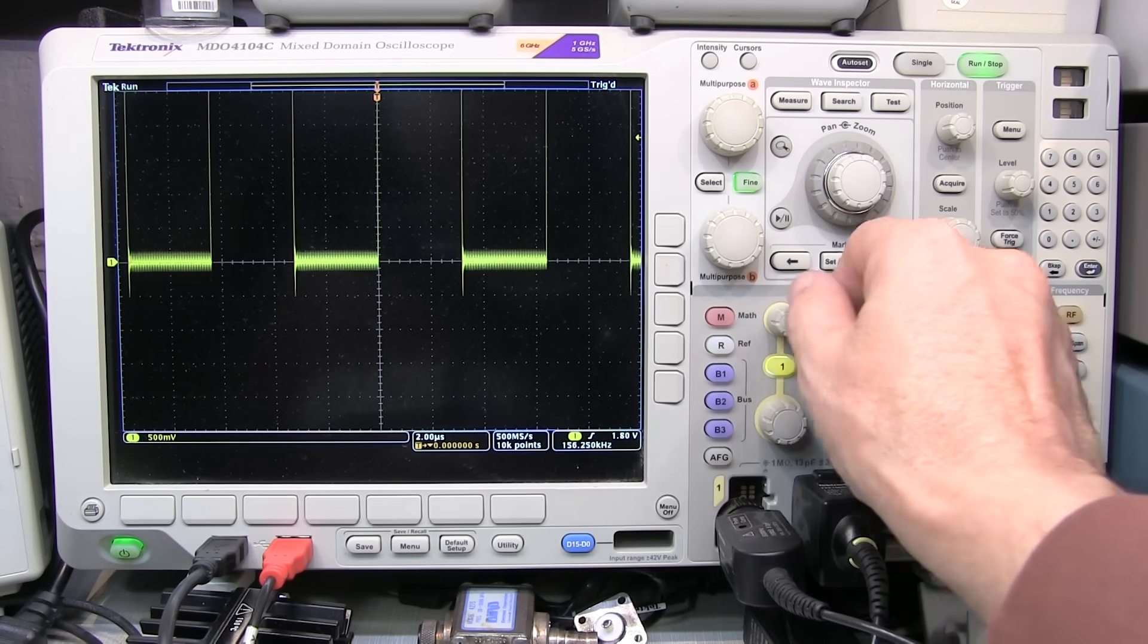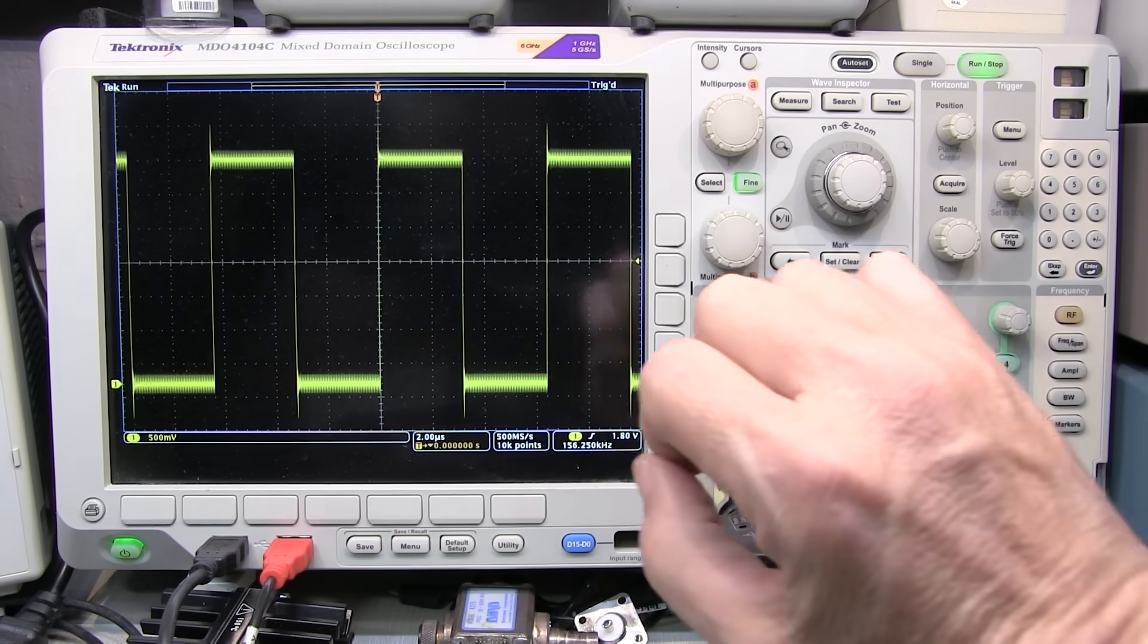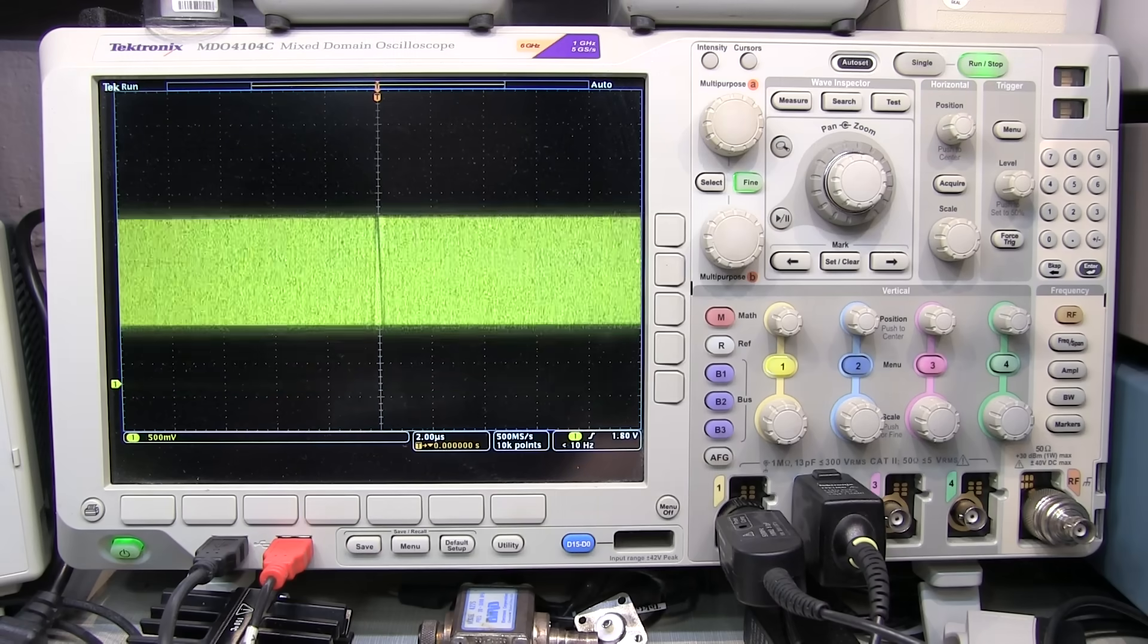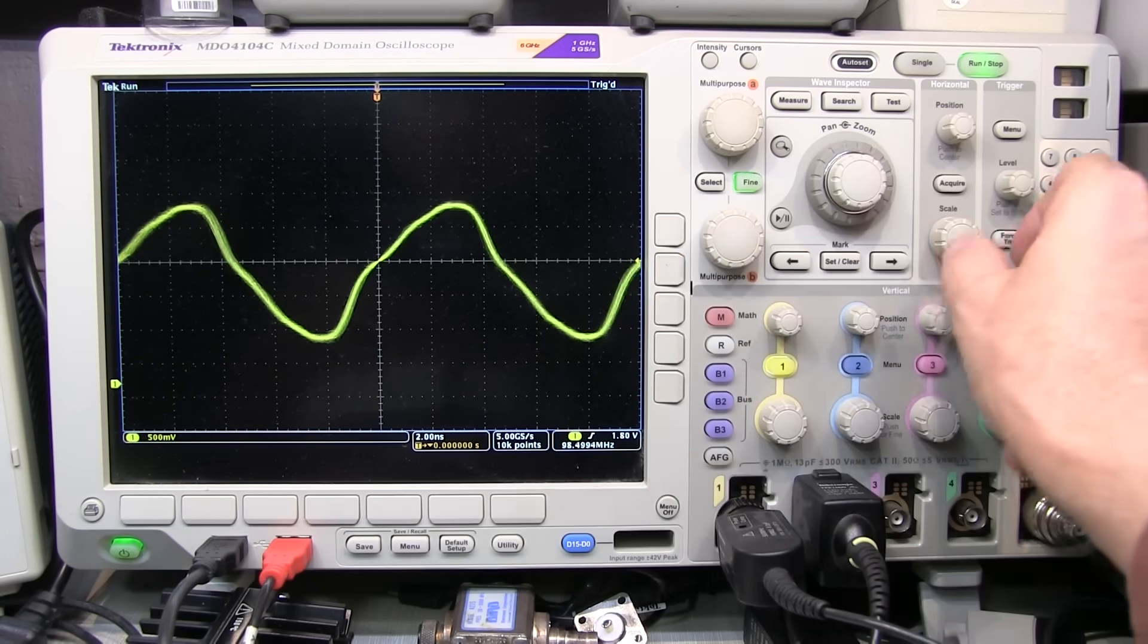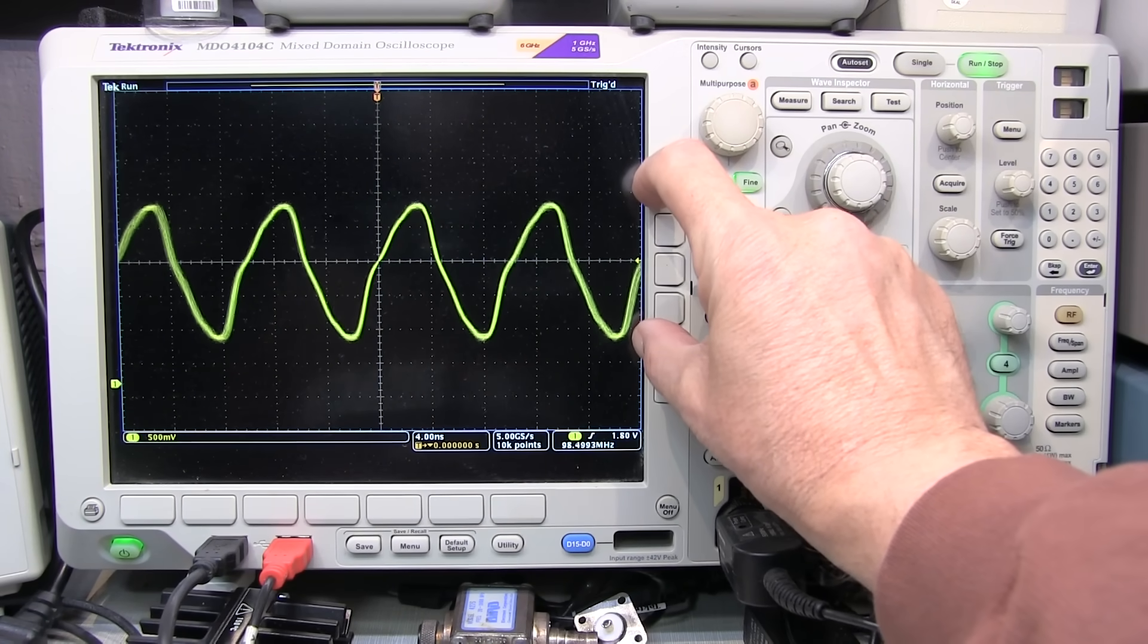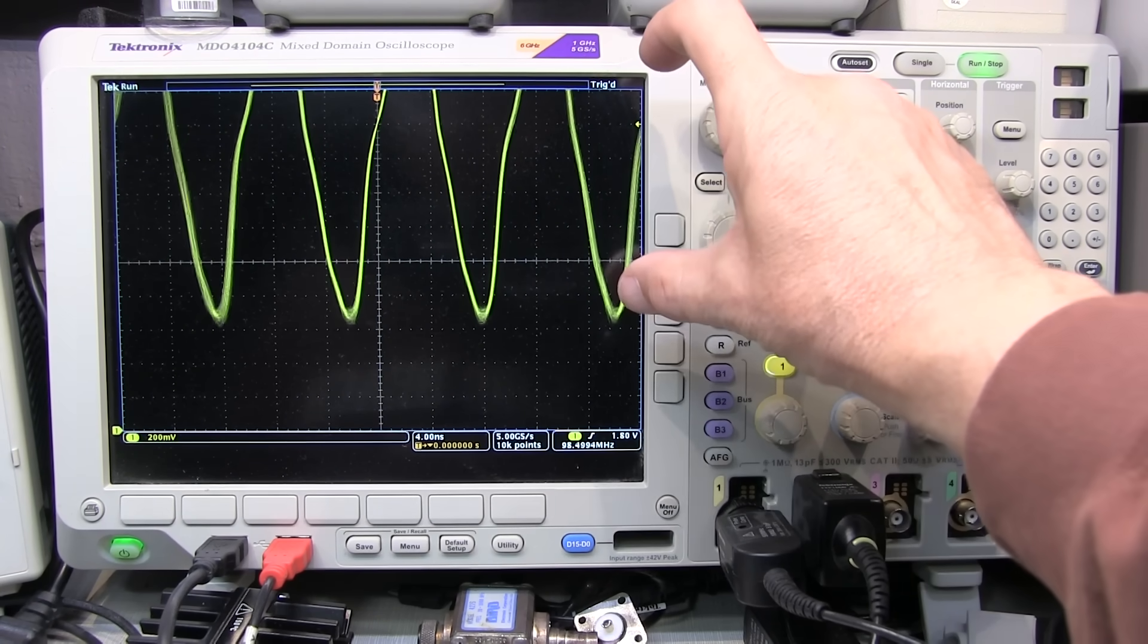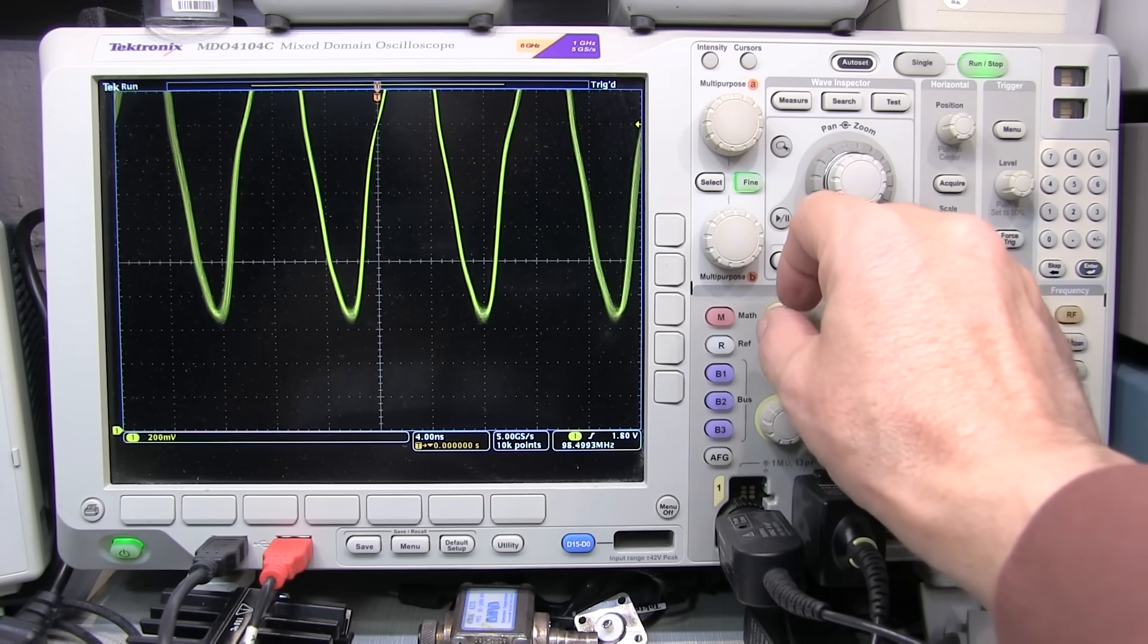If your signal starts going above screen, try moving your position down to kind of get things properly centered on the display. Now for some signals, that might not be possible. Let's go over and probe this signal over here. Let's speed up the scope here a little bit. Now we can see this particular signal. If I want to optimize the vertical scale of this, I can see I'm only occupying about half of the screen. So I can adjust my vertical scale. But you'll notice that I can't bring my position down enough to bring the waveform all the way down.